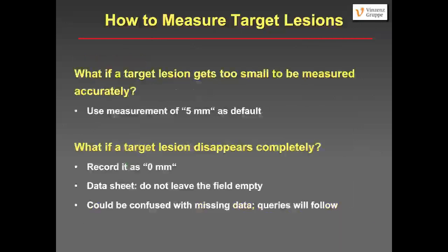What should you do if the target lesion gets too small to be measured accurately? If a one centimeter lesion at baseline shrinks to a tiny thing on follow-up, use a measurement of five millimeters as a default when filling out a data sheet. If the target lesion disappears completely, record it at zero millimeters. Do not leave the field blank, as that could be confused with missing data. If it has disappeared, just record zero millimeters.